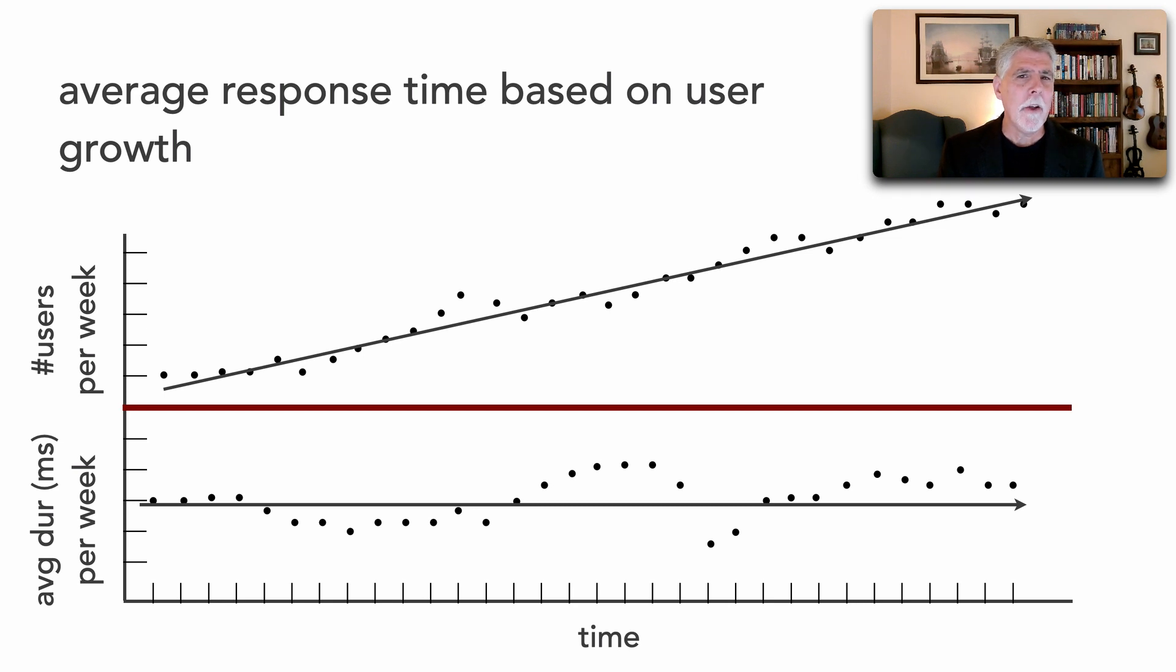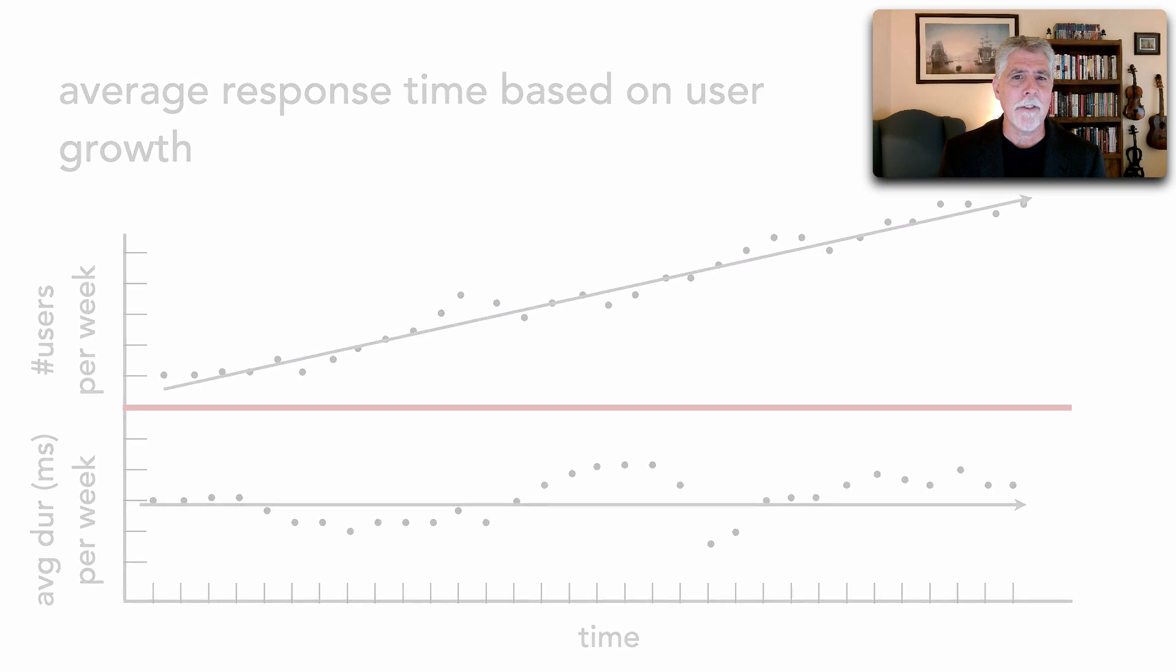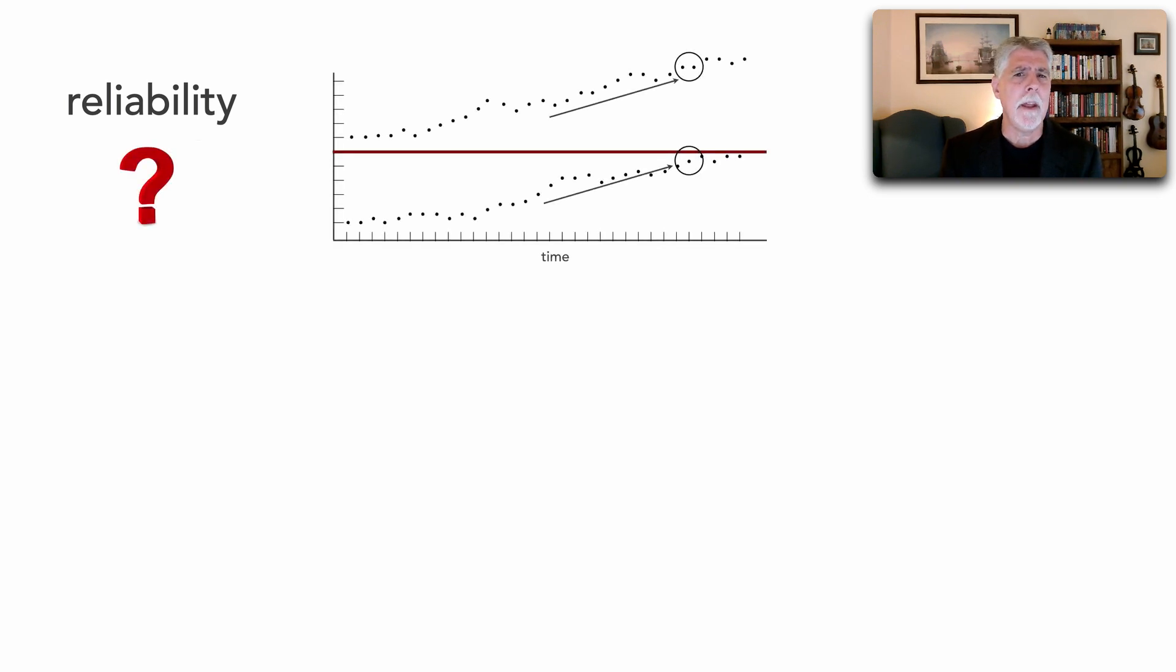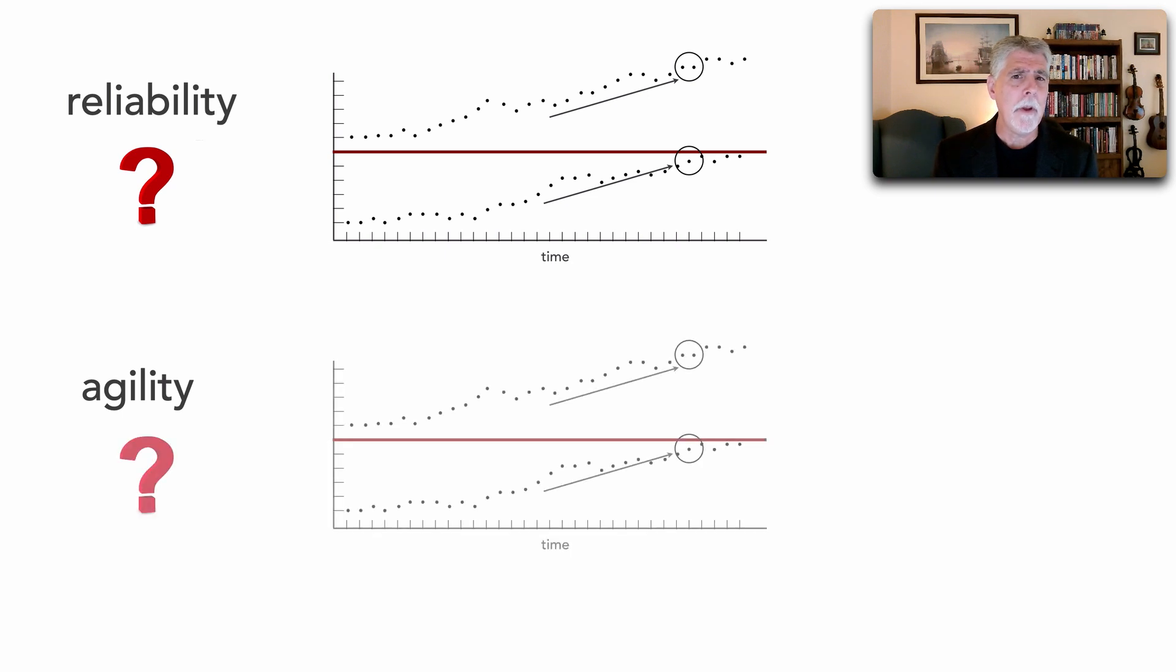However, let's take a look at two very common architecture characteristics that are really hard to define. How do we define reliability? What does that even mean? And how do we measure that? And another one we throw around quite a bit is agility, that ability to respond quickly to change. How do we define and measure that? These two are great examples of what are known as composite characteristics. In other words, it's an architecture characteristic that is comprised of other architecture characteristics.